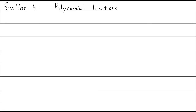In part two of section 4.1, polynomial functions, we'll talk about finding the zeros of polynomial functions and how the zeros relate to the x-intercepts and how the x-intercepts look on the graph. So this is about the zeros, x-intercepts, and the graph of polynomial functions.